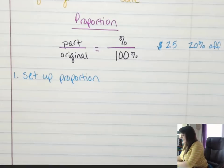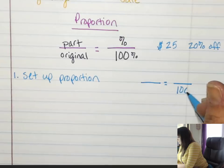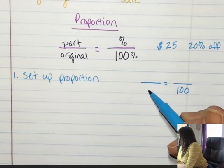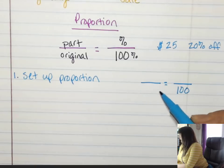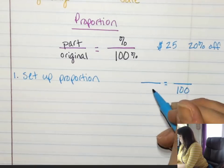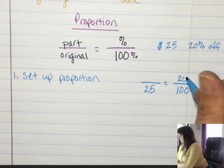So when I set it up, this is a hundred. What goes here? The original. How much was the candle? $25, so it goes here. What goes above a hundred? 20.